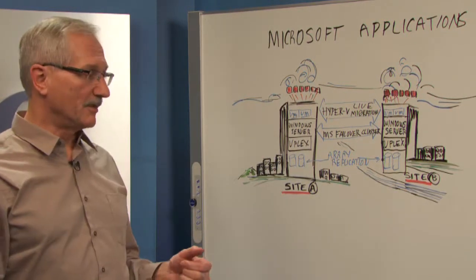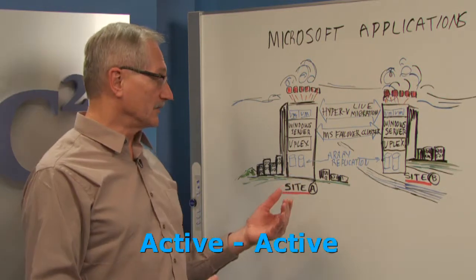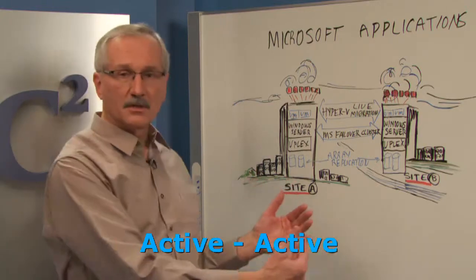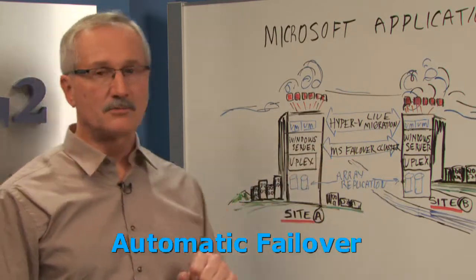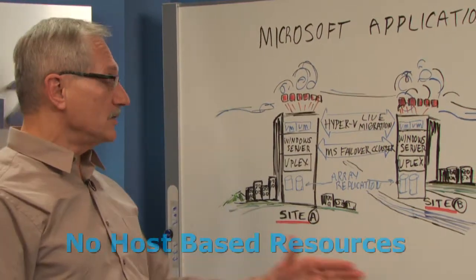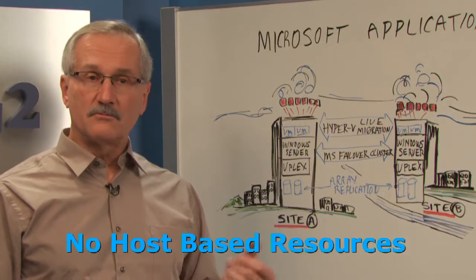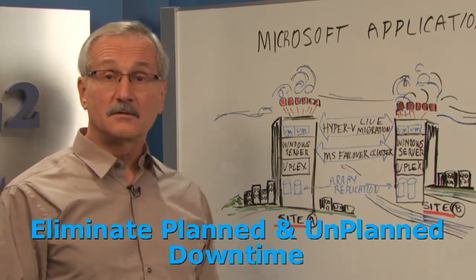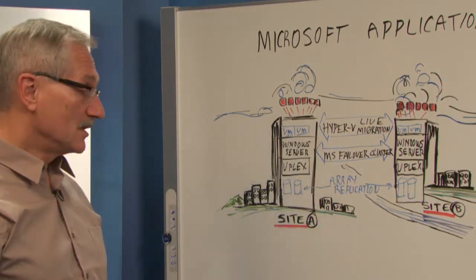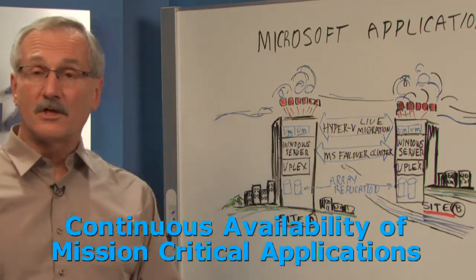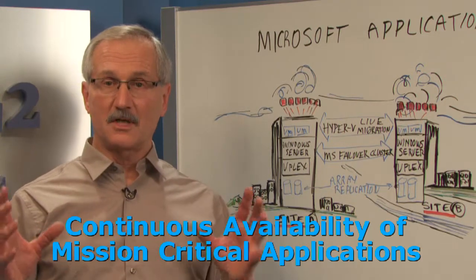Let's quickly review some of the benefits we've talked about. We've talked about active-active infrastructure — when you have a passive site, you have resources that aren't being used unless there's a failure. It's much more efficient to have both sites active at the same time. You have automatic failover with near zero RTO — in case of a disaster, applications start up almost instantly. You're not using any host-based resources to move your data, so you keep those CPU cycles running applications. We've talked about eliminating planned and unplanned downtime forever — your IT department will love this. And lastly, your high availability requirements for mission-critical applications like SharePoint and Exchange will now have not just high availability, but something much better: continuous availability. That means everything's up, never down.